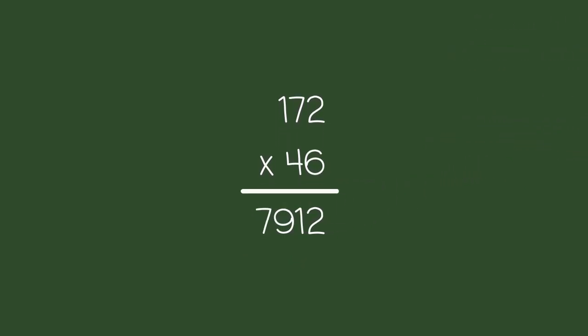So there you have it folks. 172 times 46 equals 7912. If you want, you can always use a calculator to check.